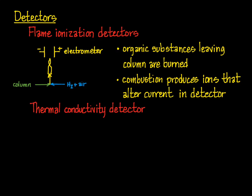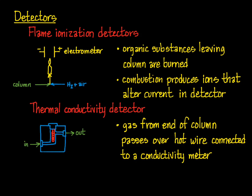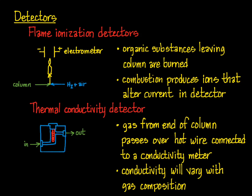In a thermal conductivity detector, the gas emerging from the column is passed over a hot wire that is connected to a conductivity meter. Helium, the carrier gas most often used in GC, has an extremely high thermal conductivity. On the other hand, organic compounds are less efficient heat conductors. With only carrier gas passing over the hot wire, a constant heat loss is maintained, and there's a constant electrical output. When an organic compound reaches the detector, the gas composition changes, and it causes the hot filament to heat up and its electrical resistance to increase, and that's recorded as a signal.